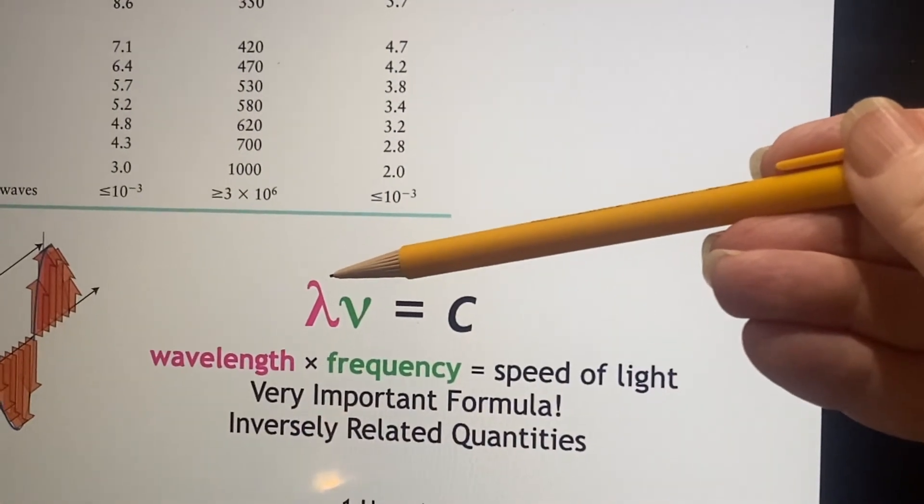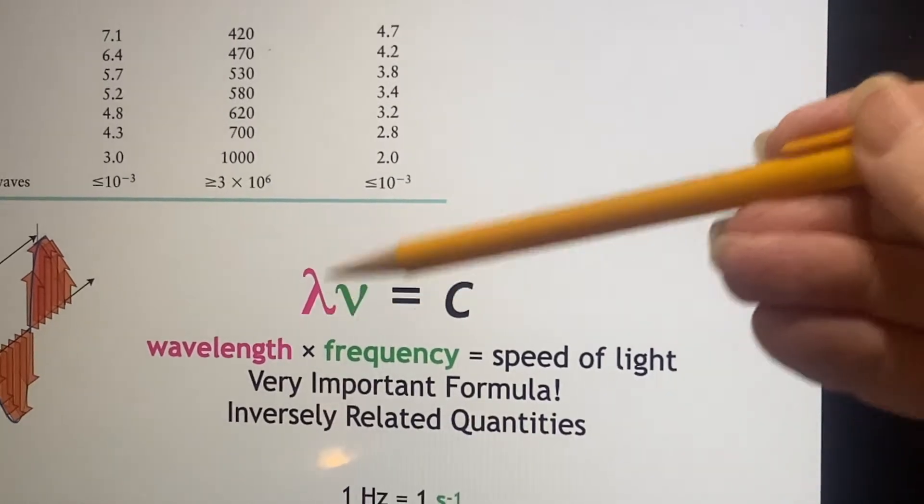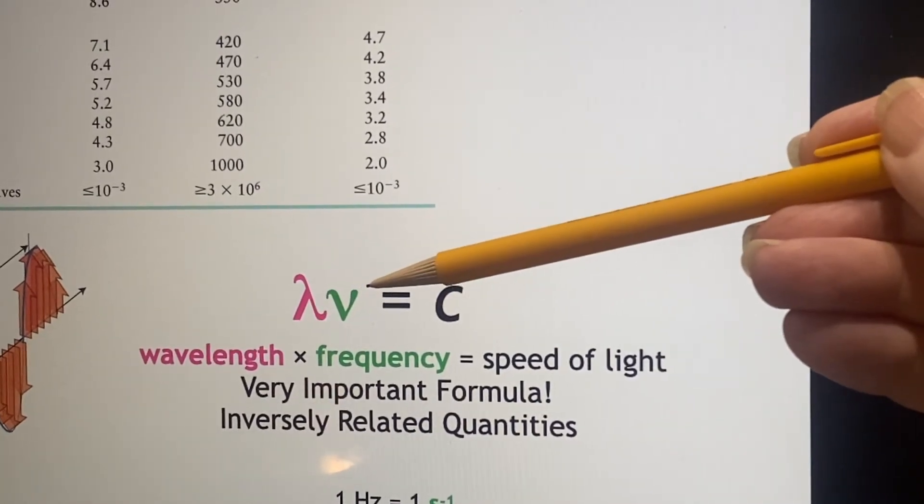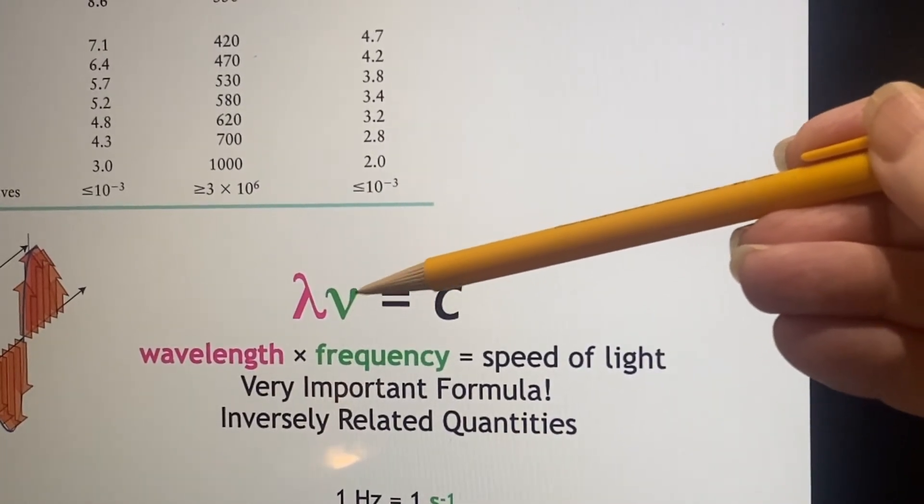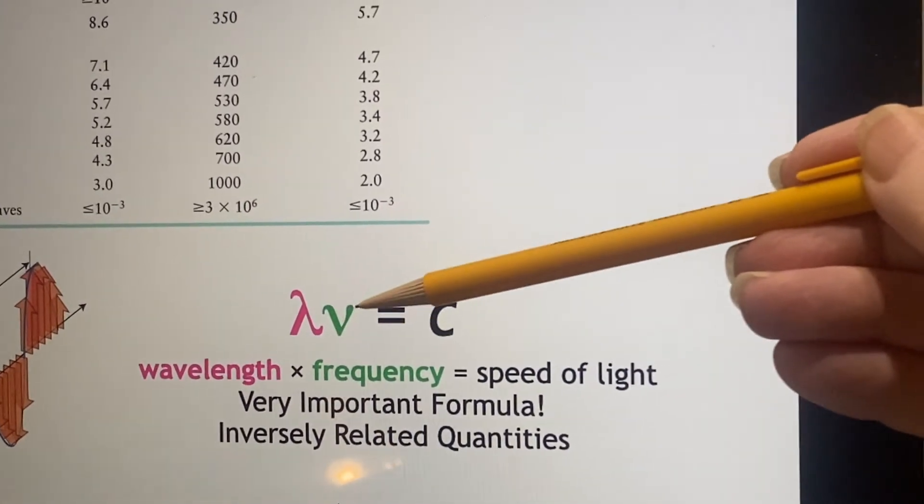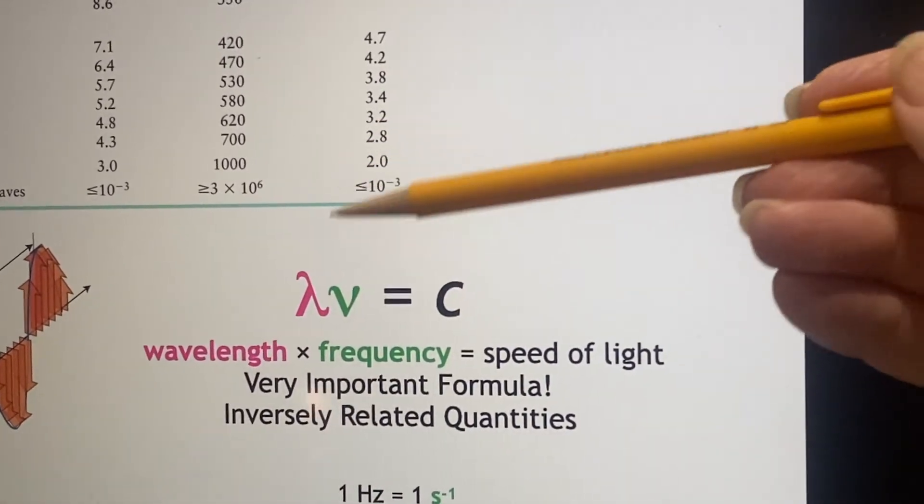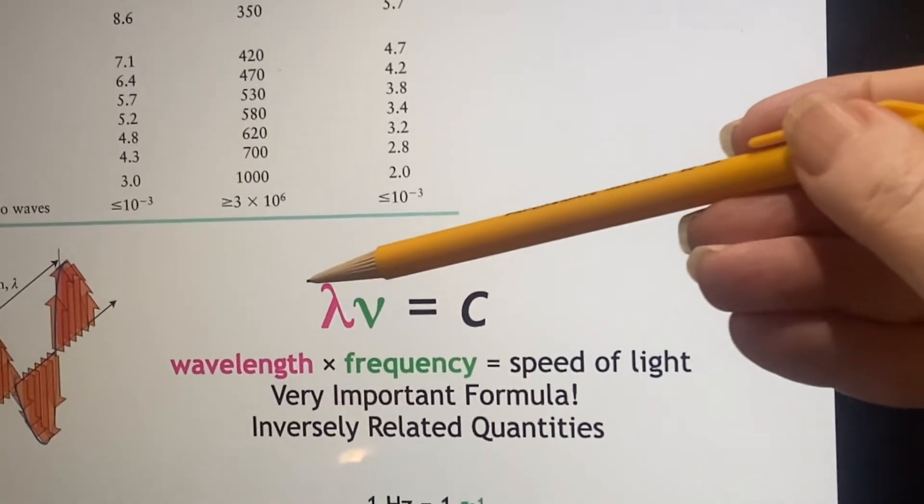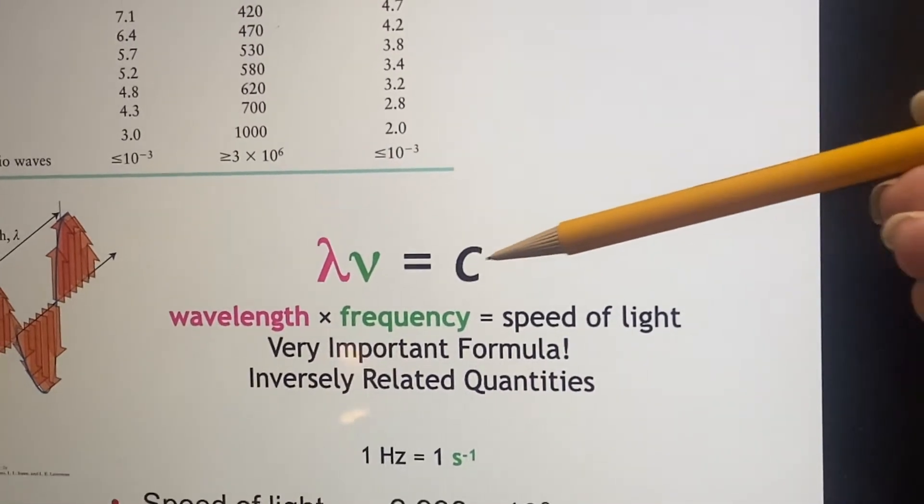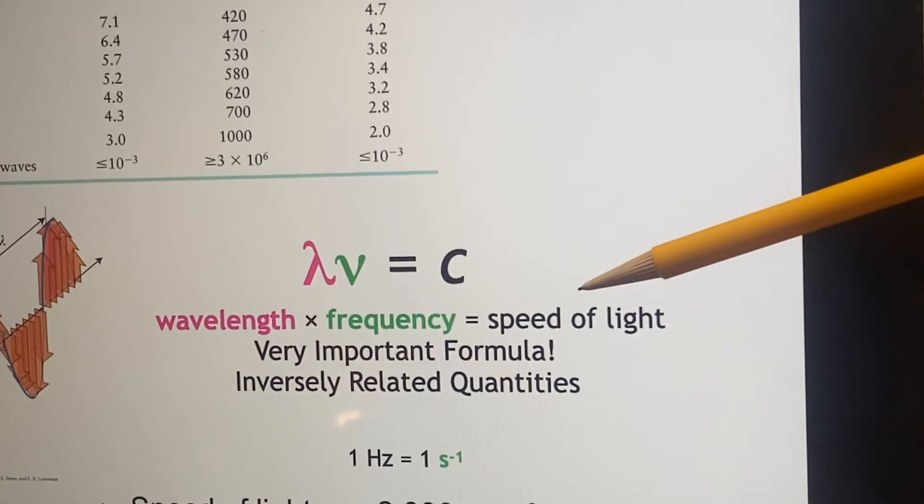Lambda, which stands for the wavelength, times frequency, nu. This is the Greek letter nu. It doesn't look much like an N to me, which nu reminds me of N, but okay, there it is. So lambda nu equals C. If you multiply these together, you're going to get the speed of light.